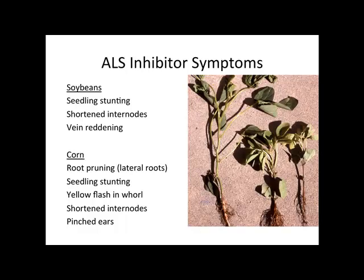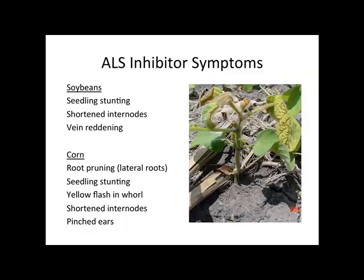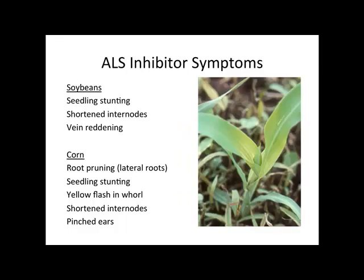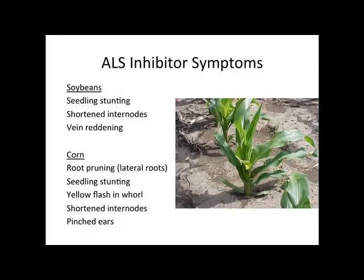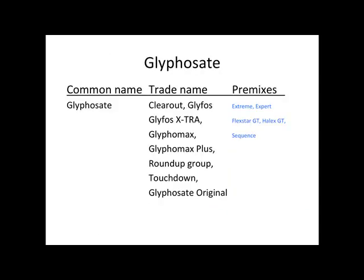For soybeans, seedling stunting, shortened internodes, and vein reddening are the common injury symptoms — there's the nice vein reddening and the shortened internodes. For corn, we have root pruning, seedling stunting, yellow flash in the whorl, shortened internodes, and pinched ears. So there's a nice range of injury characteristics for the ALS inhibitors.